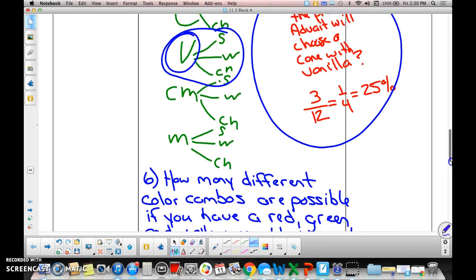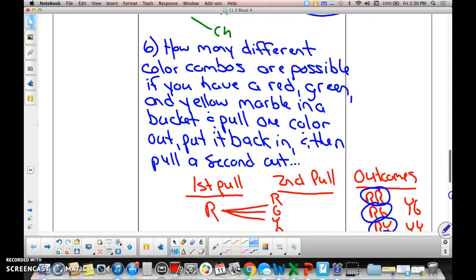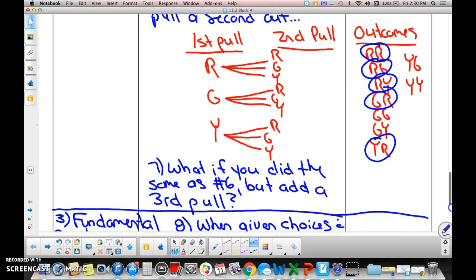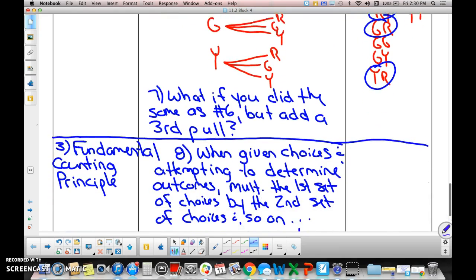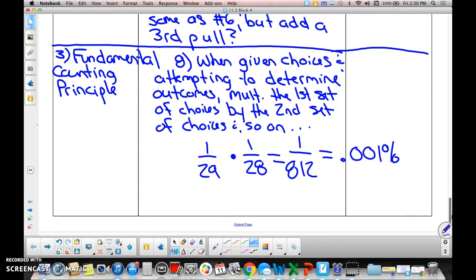Last one, then. Applying this to the marble point, which we just went by, is the fundamental counting principle. When given choices and attempting to determine outcomes, multiply the first set of choices by the second set of choices. Here's our example.